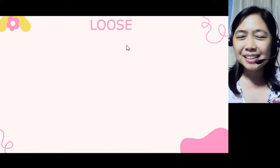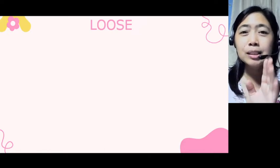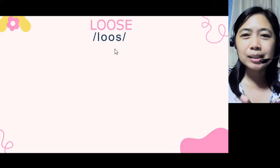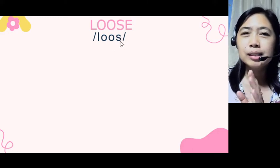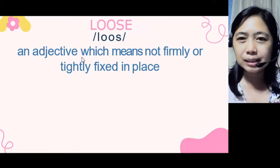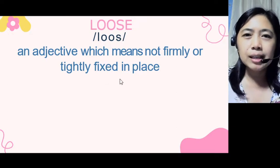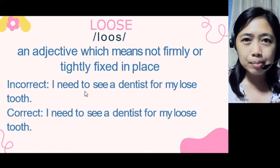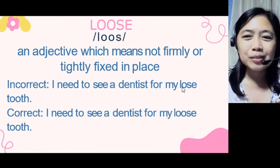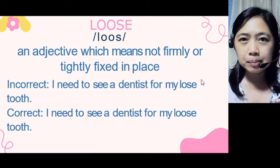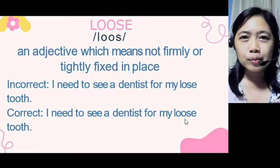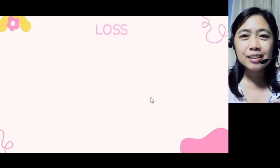The second word is L-O-O-S-E, with two O's, pronounced as 'loose' — with an S sound, not Z. This word is used as an adjective and means 'not firmly or tightly fixed in place.' For example: 'I need to see a dentist for my loose tooth.' We use this spelling because 'loose' is an adjective, not a verb.